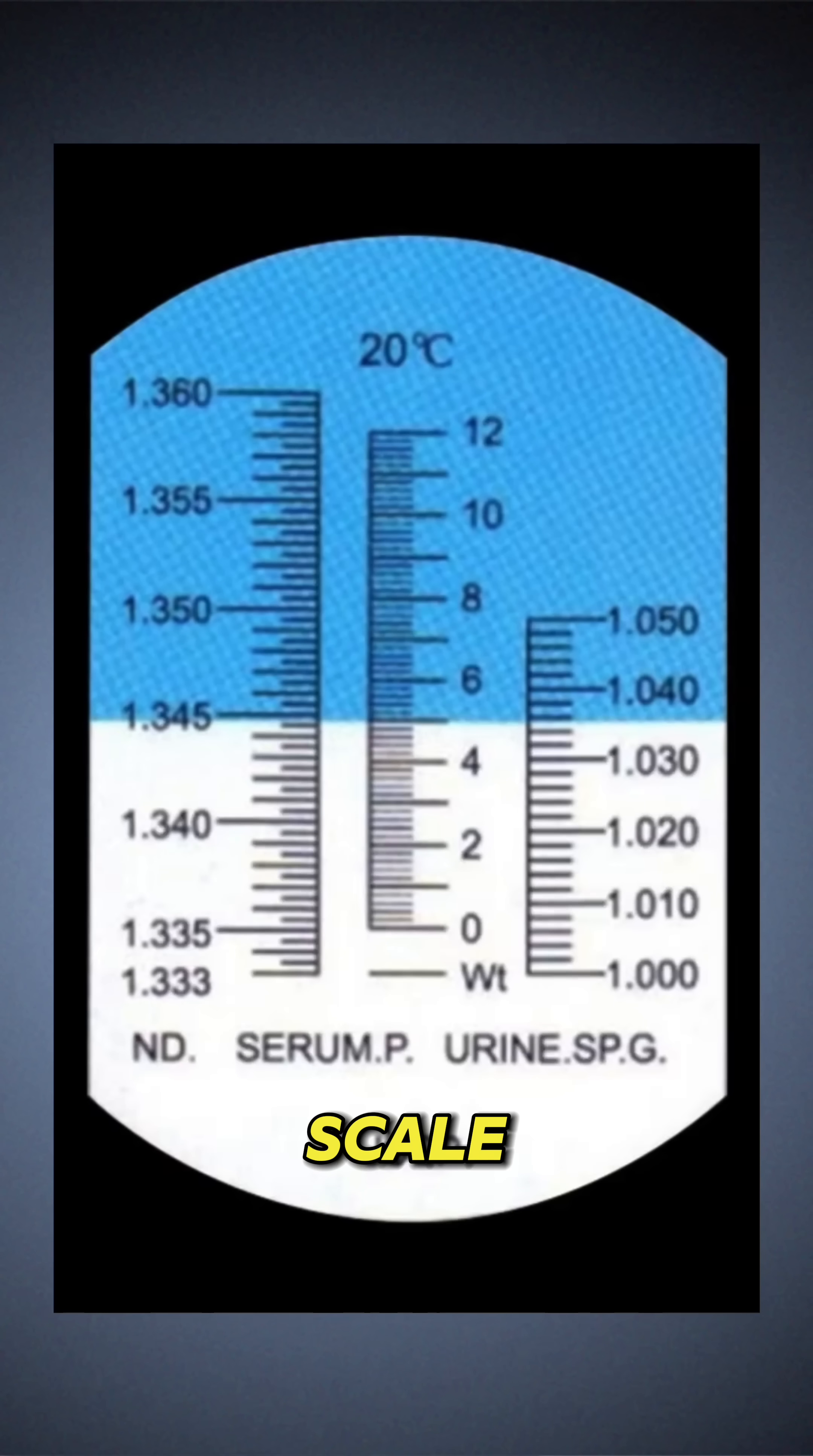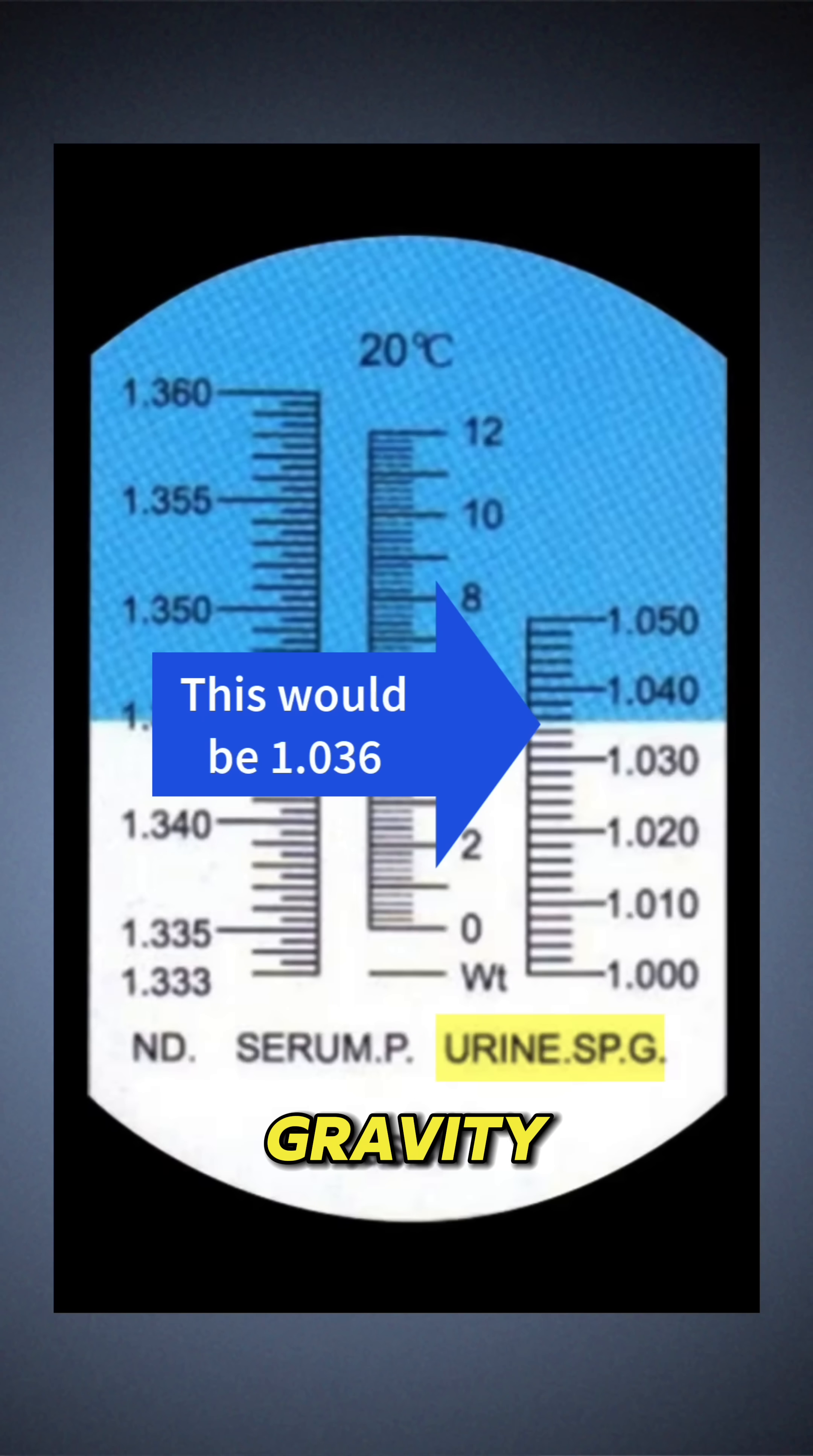We use the scale urine specific gravity. So the more concentrated or the darker the urine, the higher that number will be.